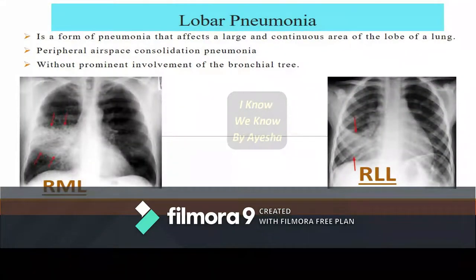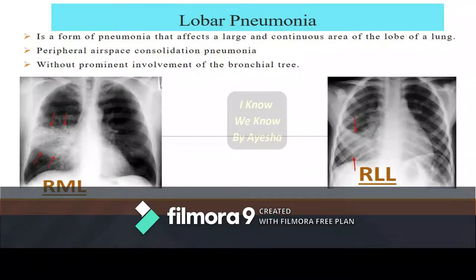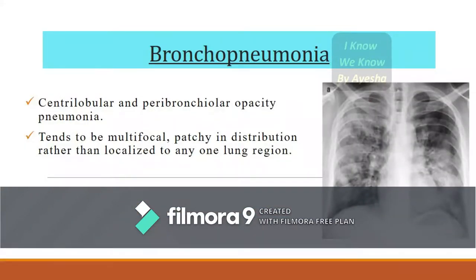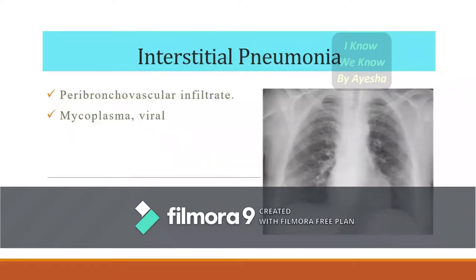In the anatomical classification, lobar pneumonia affects only the lobes of the lung — right middle lobe, right lower lobe, left lower lobe, or left upper lobe — with peripheral air space consolidation without prominent involvement of the bronchial tree. Bronchopneumonia shows centrilobular and peribronchiolar opacity, tending to be multifocal and patchy in distribution rather than localized. Interstitial pneumonia mainly involves peribronchiovascular infiltrates, caused by mycoplasmas and viruses.